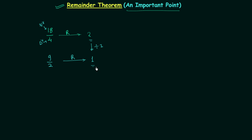So 1 is not the correct remainder. We want the correct remainder, and to do this we need to reverse the effect of the division. The division was made by 2, so we need to reverse its effect by multiplying this remainder 1 by 2. So we have 2 as the final remainder.